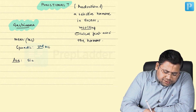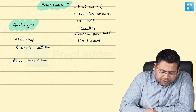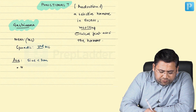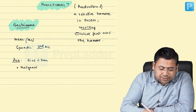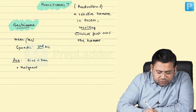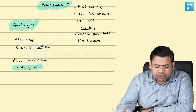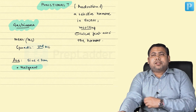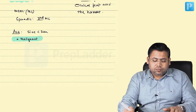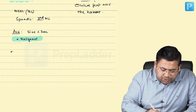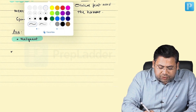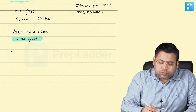The average size of a gastrinoma is less than two centimeters. However, there is very little chance that they can be benign — they are always considered to be malignant.